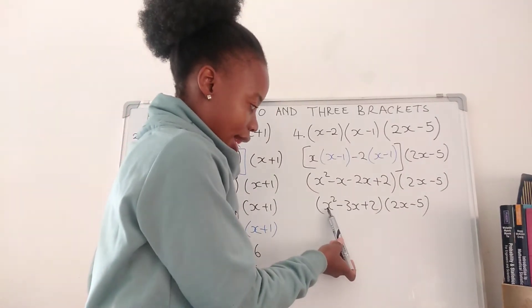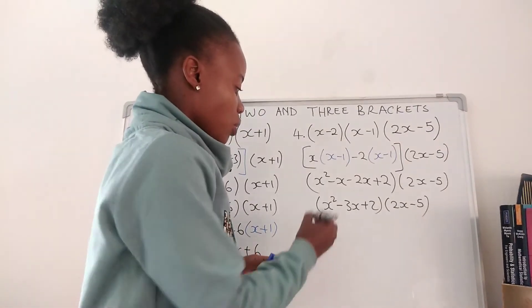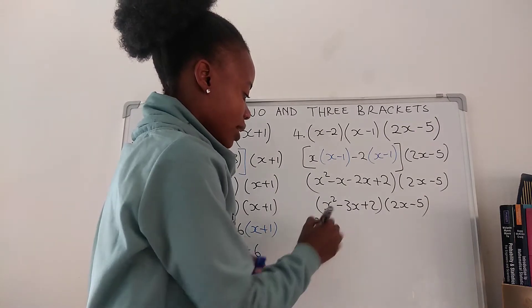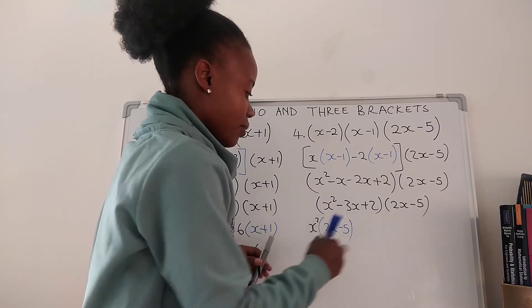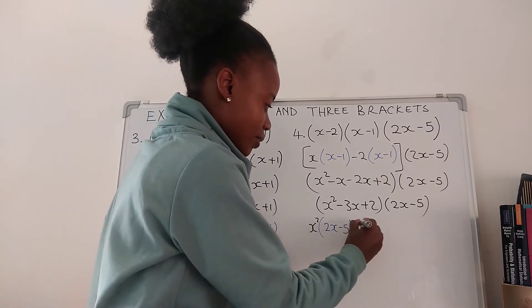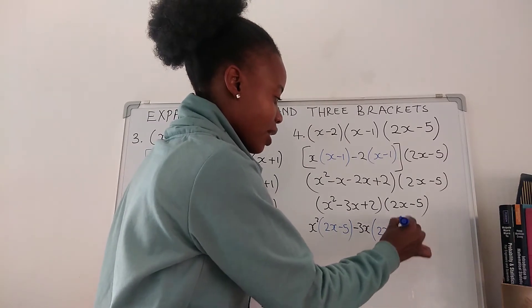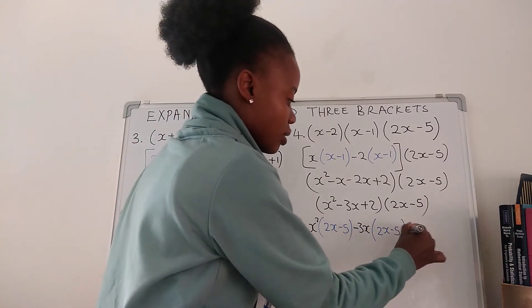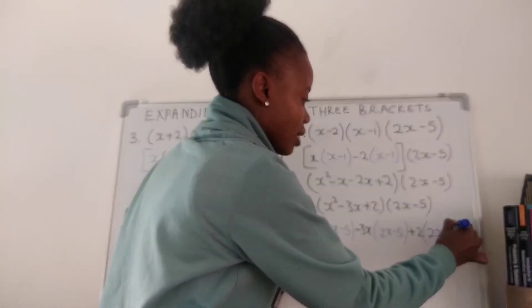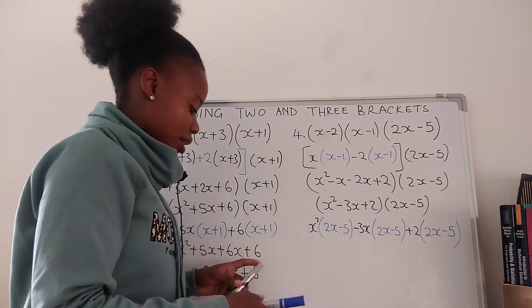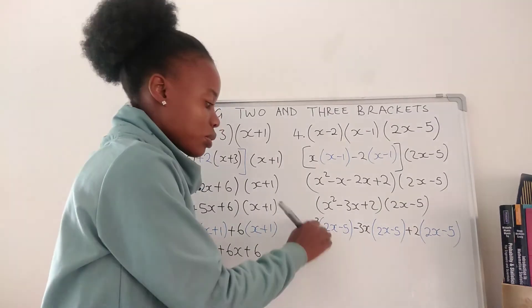Now we're going to multiply all the terms on this side with everything on this side. So we're going to have x squared(2x − 5), negative 3x(2x − 5), and positive 2(2x − 5). After this step we can now remove brackets.